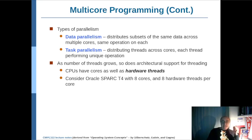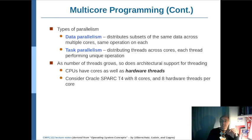As the number of threads grows and multi-threaded programming becomes more widespread, the architectural support for threading also improves. Some CPUs have hardware threads in the cores. For example, Oracle's Spark T4 processor has eight cores and in each core it has eight hardware threads, meaning Spark T4 can support 64 hardware threads in total.